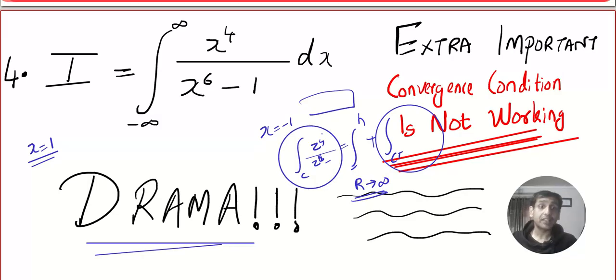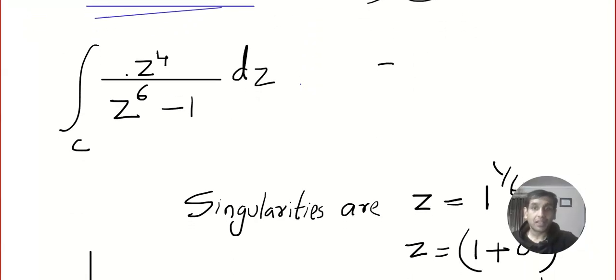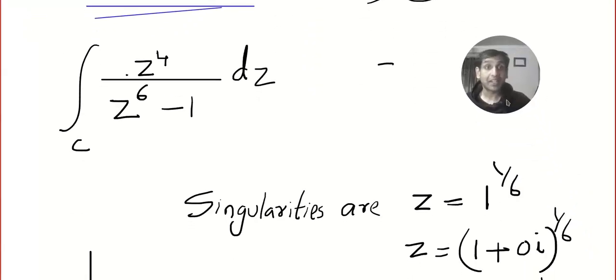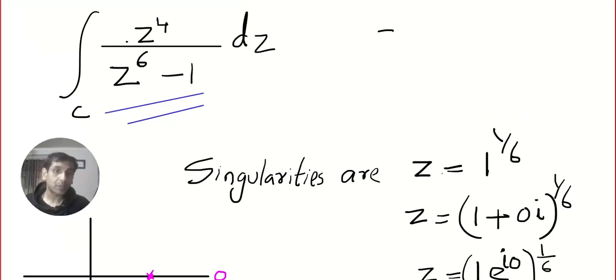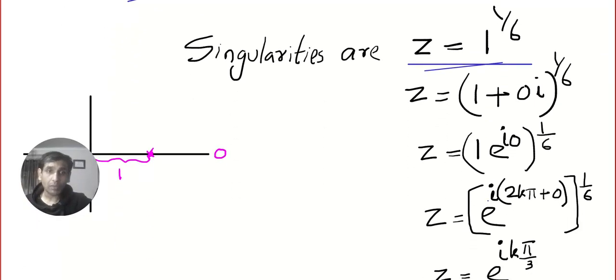Now bad news, bad news. Because I found the singularities, and I think you know how to find the singularity. Can you see there are six roots? Not one, not two, not three—six roots are there. And one means one plus zero I. I'm converting it into modulus argument form, generalizing.